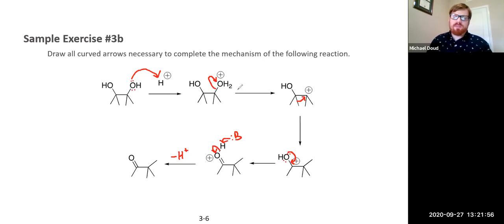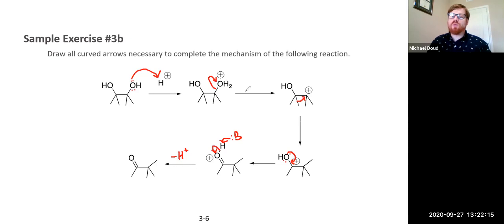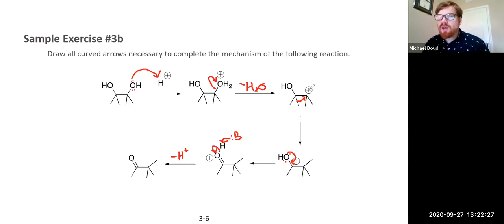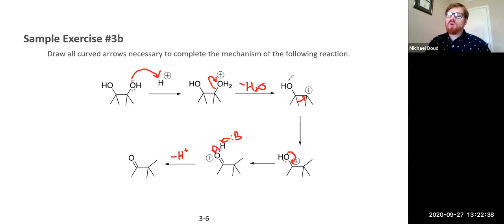Let's review problem 3B. Step one to step two: we start with a diol — a dialcohol — and add acid. The first step is a proton transfer where one of the alcohols picks up a proton to form an OH₂⁺ group, which is a really good leaving group because it leaves as water. Then we lose water — loss of a leaving group — forming a carbocation. This carbocation is subject to rearrangement via a 1,2-methide shift, going to a tertiary carbocation that has an oxygen with a lone pair, making it resonance stabilized.